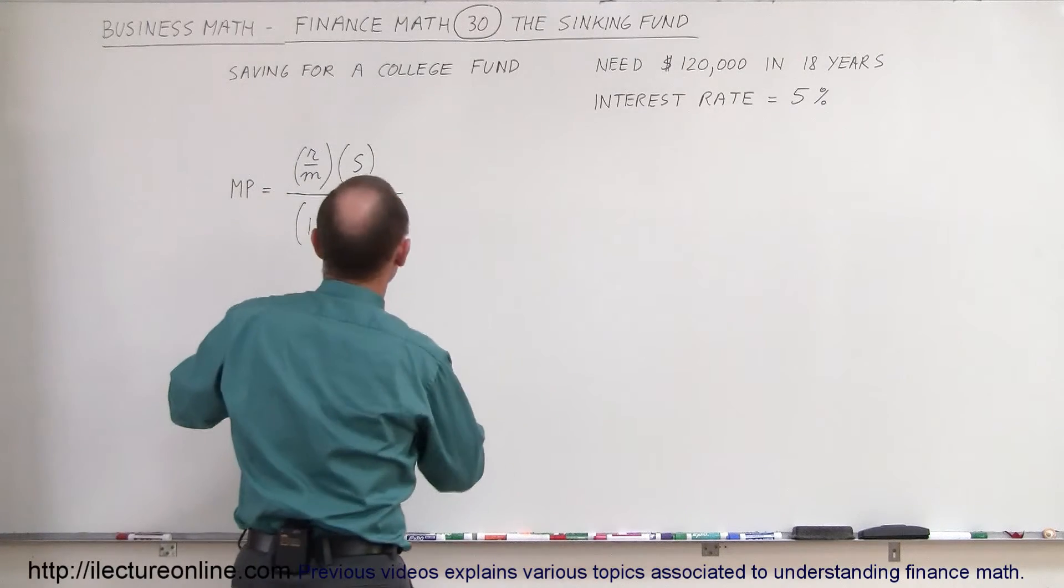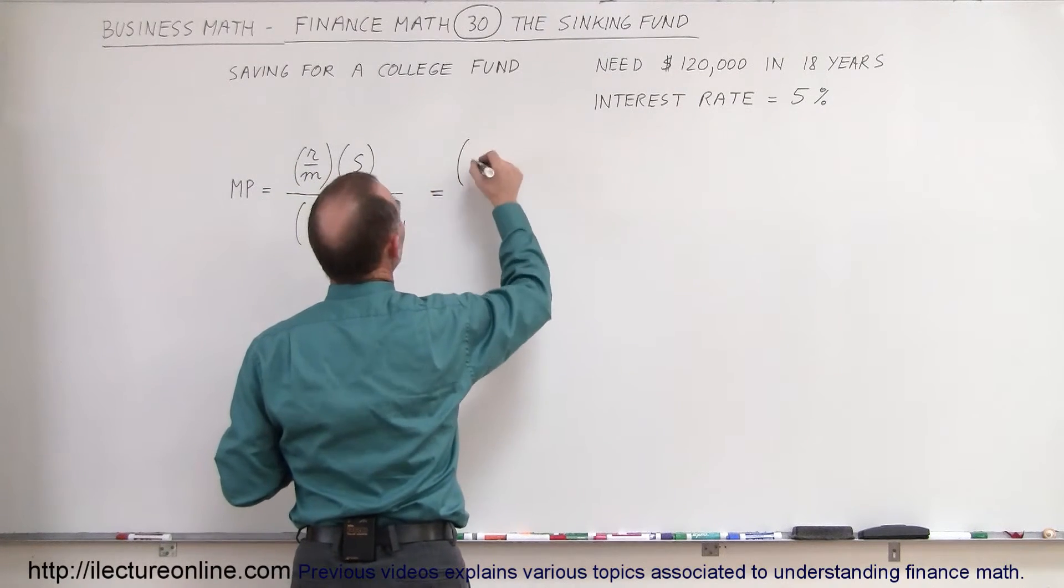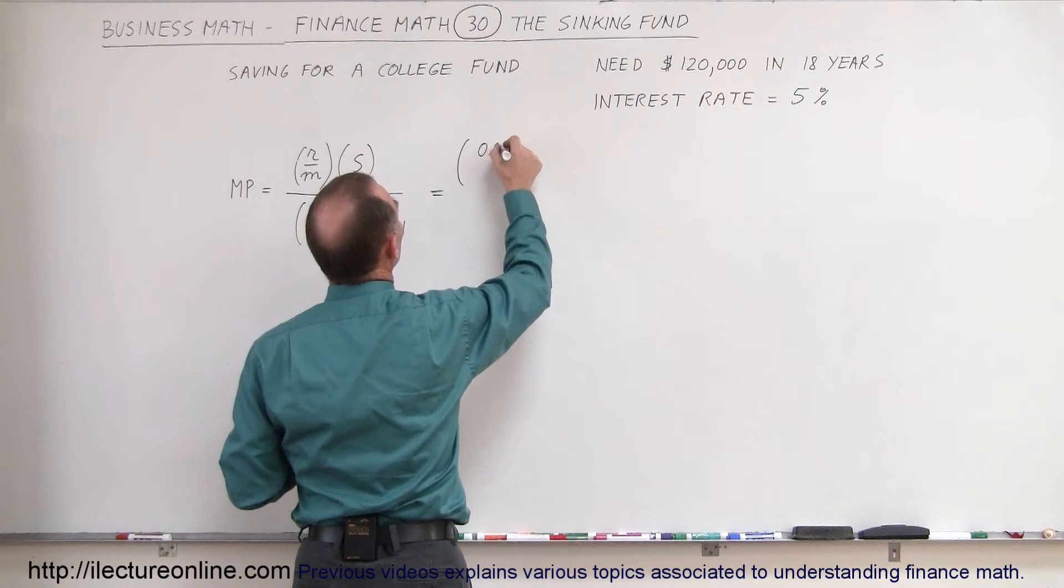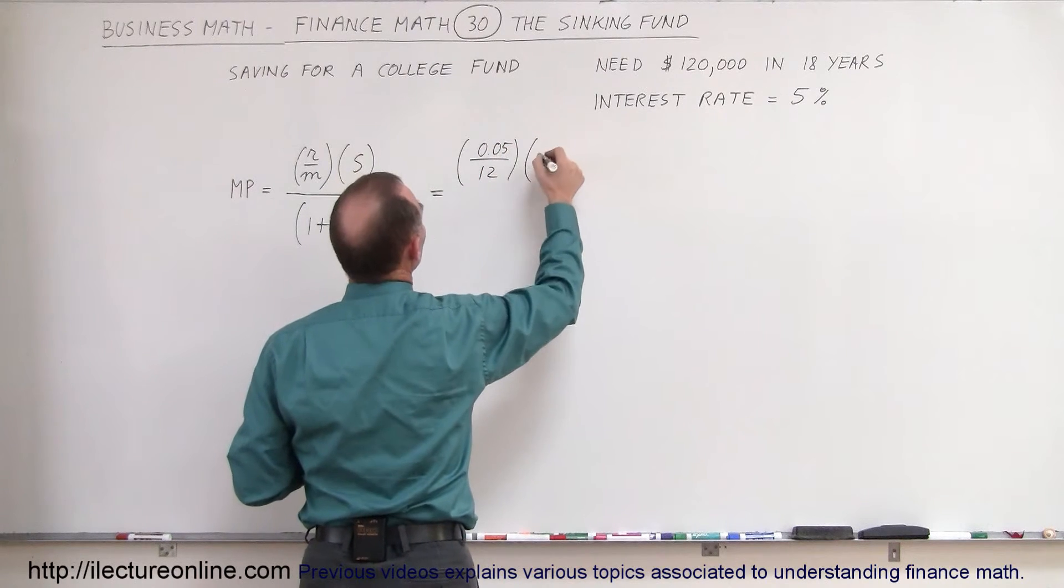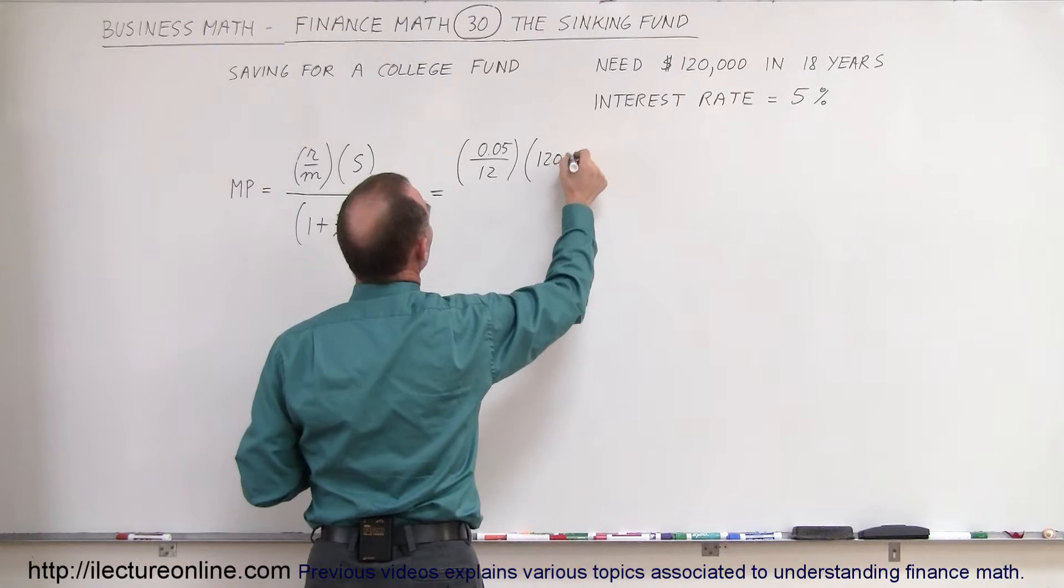So let's plug in some numbers and see what we get. So this is equal to the rate which is 0.05 divided by 12 times the amount of money that we need which is $120,000...